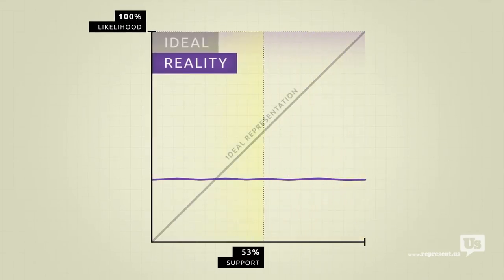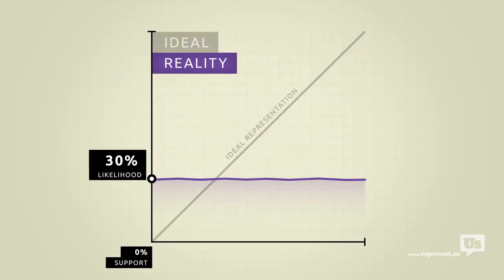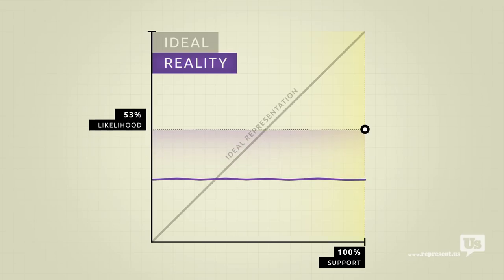Take an idea that nobody supports. Literally nobody. And it has about a 30% chance of becoming federal law. Now take an incredibly popular idea. The most popular idea this country has ever seen. And there's also about a 30% chance of it becoming law.